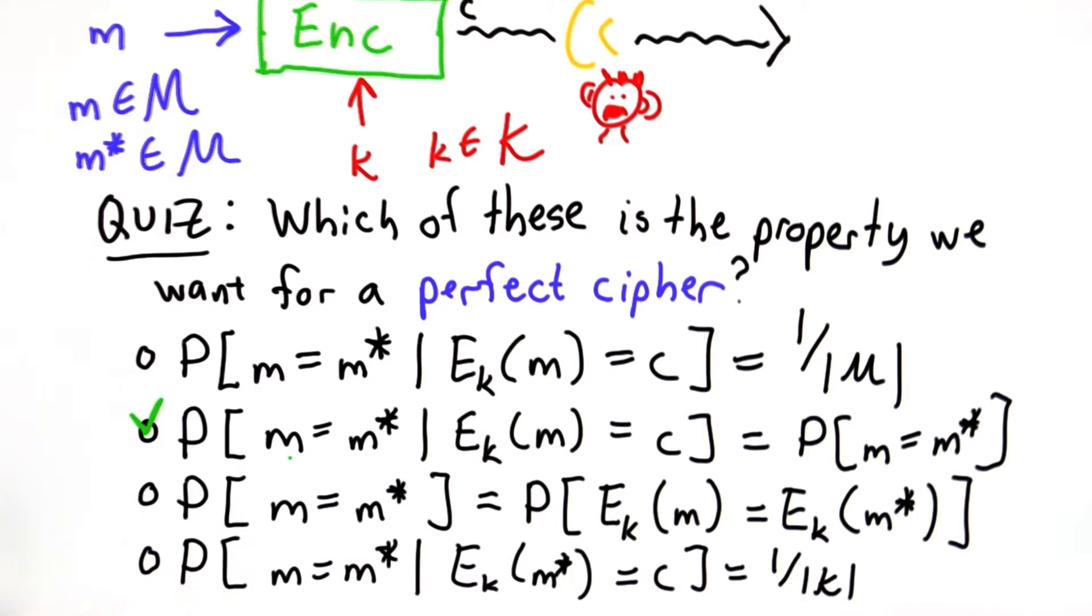What we want to know is whether the message is equal to m star. Both of those are selected, drawn from the set of possible messages.